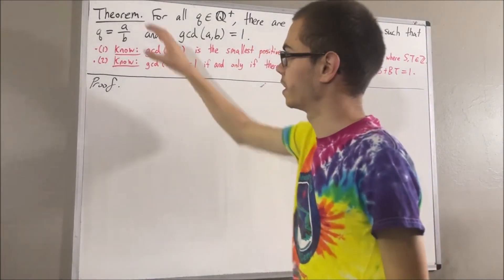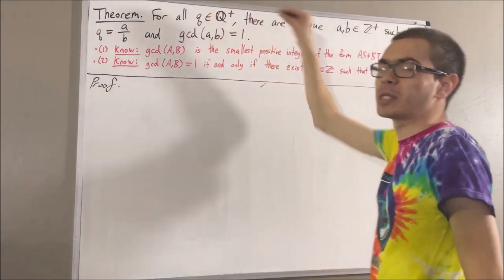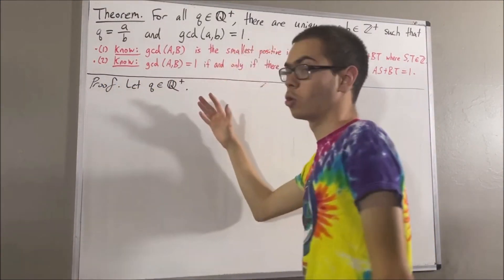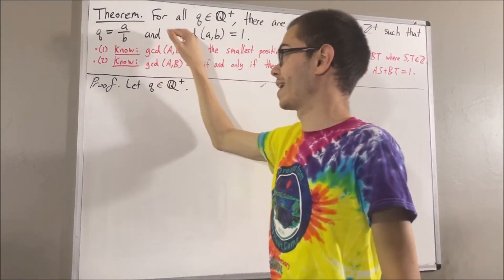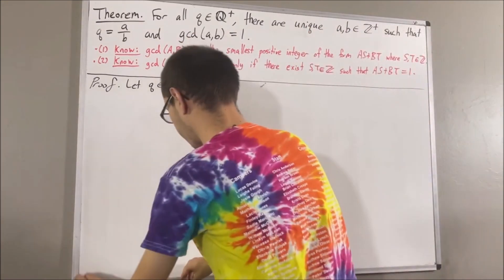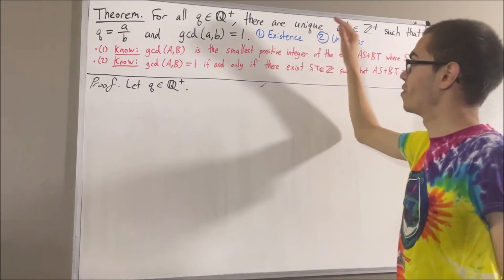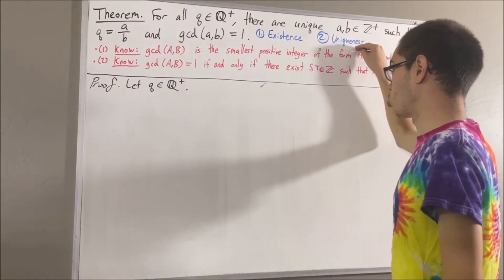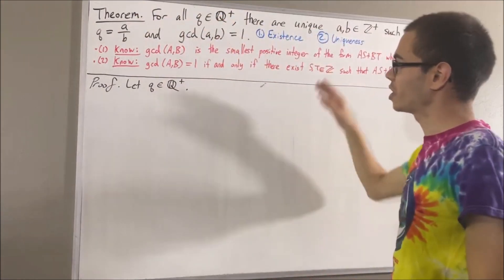Now let's get into proving this theorem. To start out the proof, since we're trying to prove a statement about all positive rational numbers, let's give ourselves an arbitrary positive rational number — call it Q. The whole goal is to show that there is a unique pair of positive integers A and B such that Q equals A over B and gcd(A, B) equals 1. We're going to break this proof up into two portions: existence and uniqueness. In existence, we prove there exists such a pair; in uniqueness, we prove that pair is the only one.